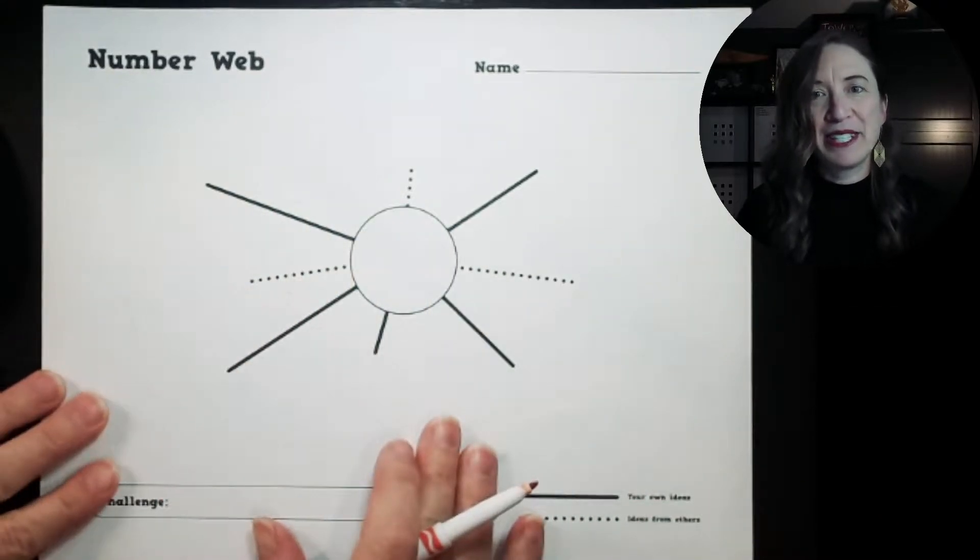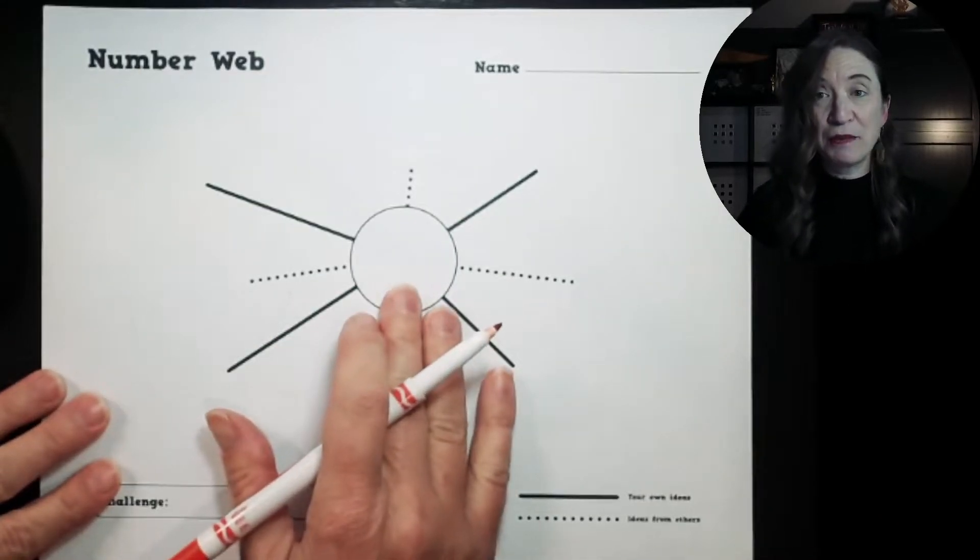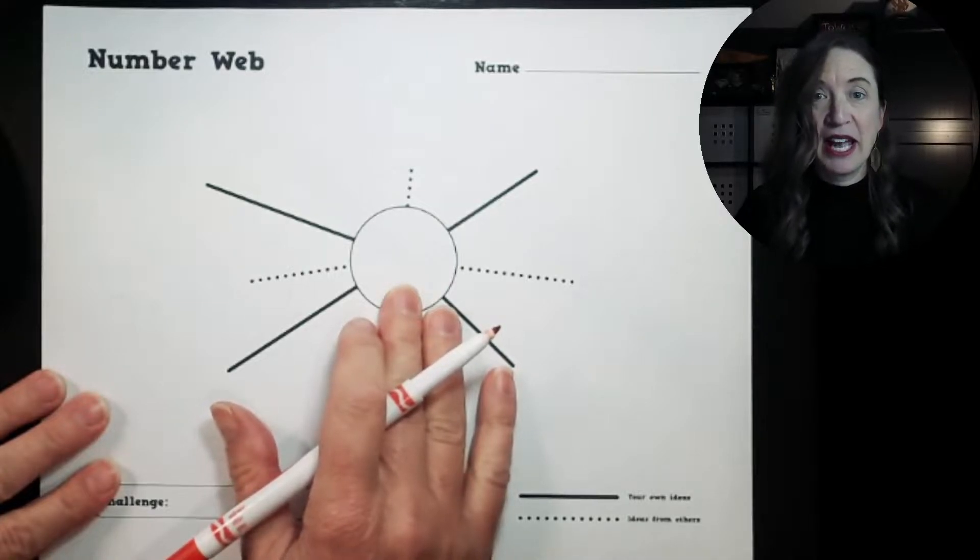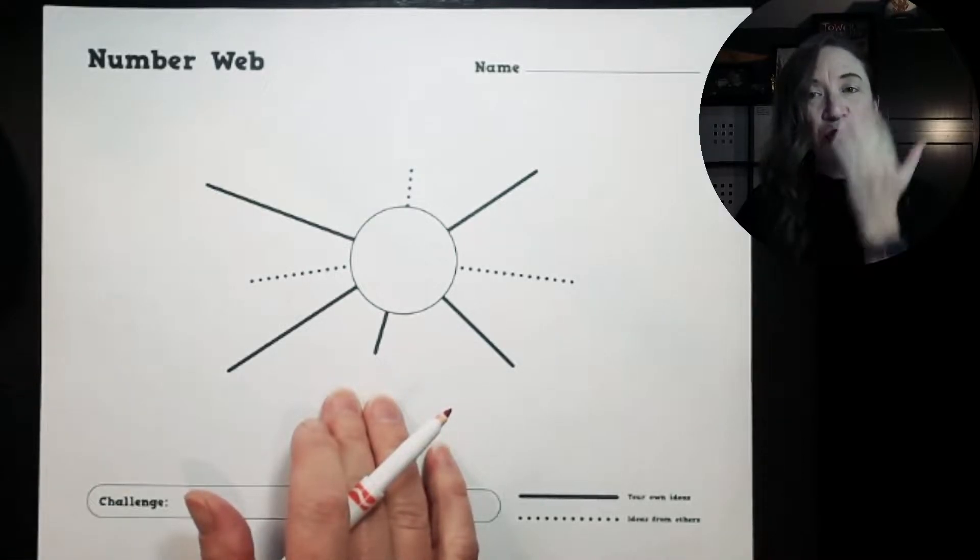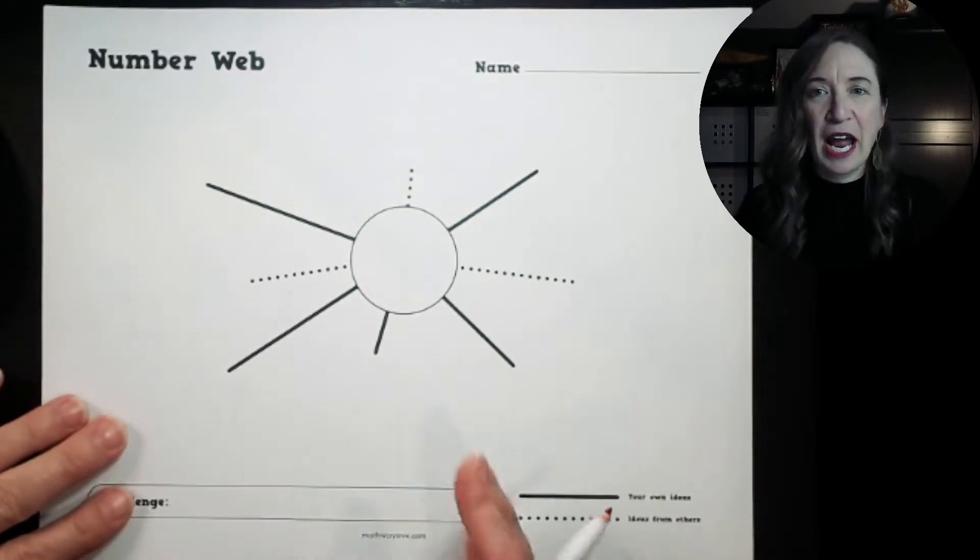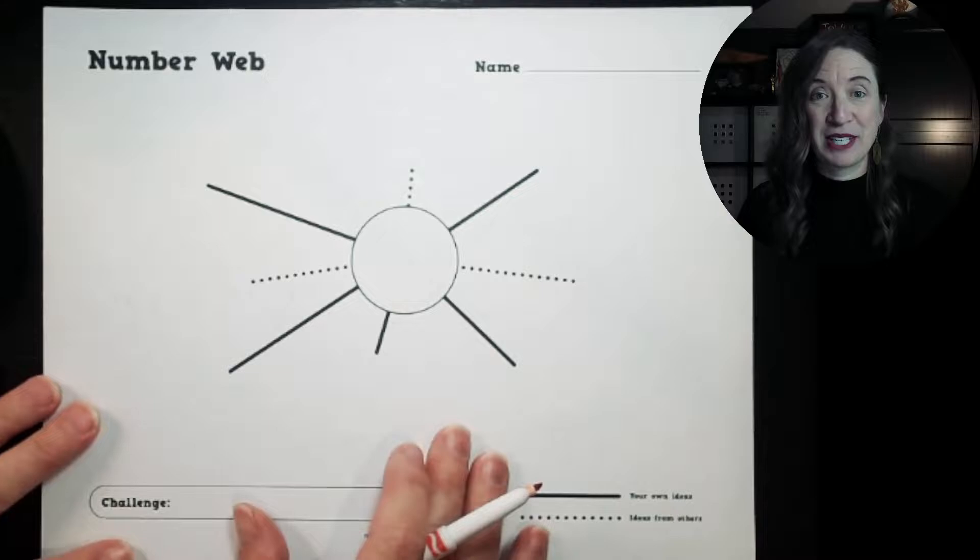So the idea of a number web is that we can take any number, a whole number, a fraction, a decimal, and we can express it in many different ways. I want you to challenge yourself to see how many different ways you can express a number.